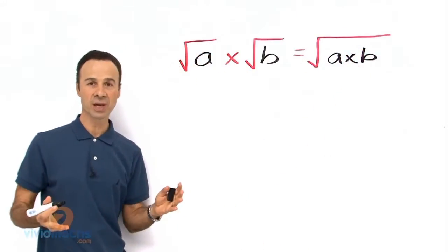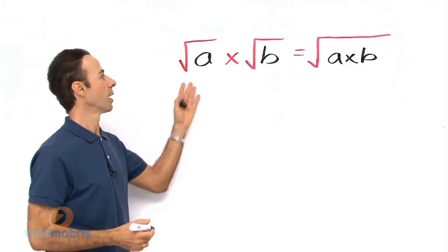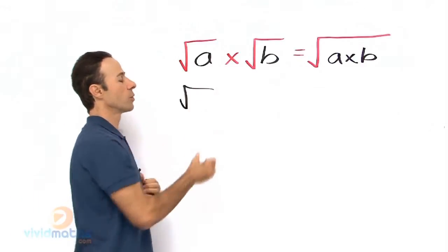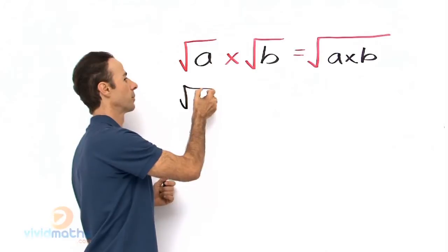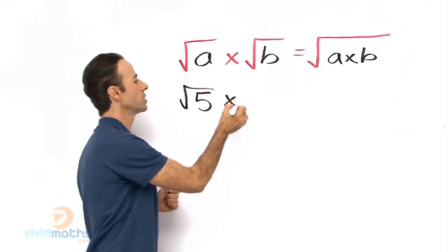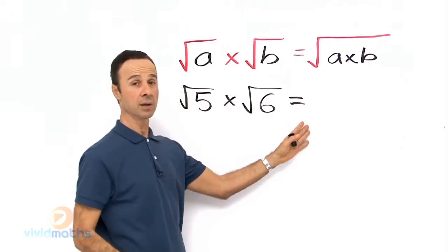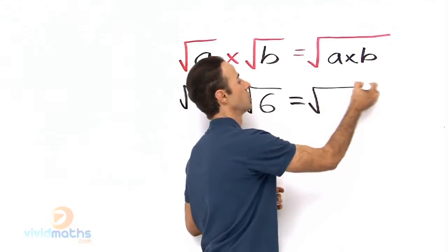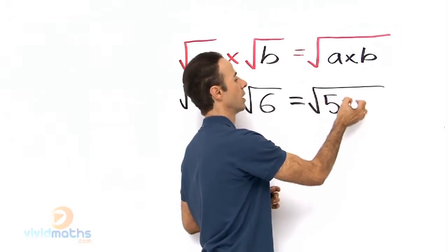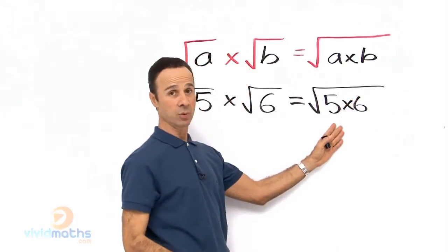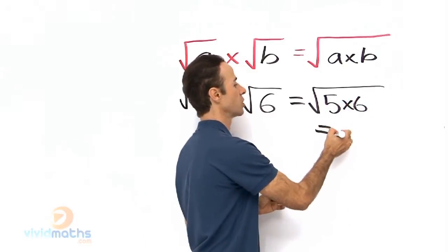So for example, let's say we had the square root of 5 times the square root of 6. That is simply the square root of 5 times 6, which equals the square root of 30.